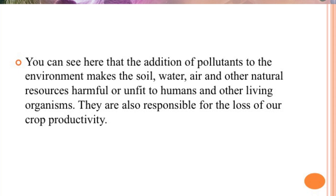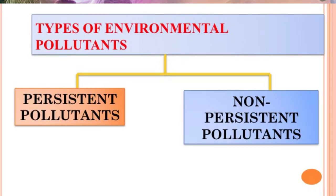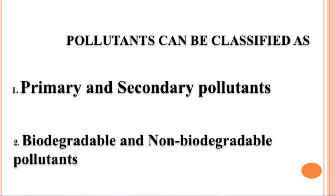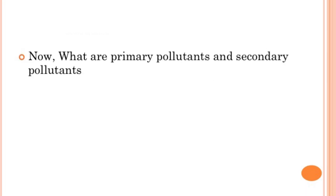The addition of pollutants to the environment makes the soil, water, air and other natural resources harmful or unfit for humans and other living organisms. These are also responsible for the loss of crop productivity. There are different types of environmental pollutants — some are persistent pollutants and some are non-persistent. Pollutants can also be classified as primary and secondary pollutants, and as biodegradable and non-biodegradable pollutants.